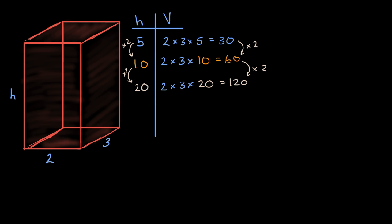Now let's think about something interesting. Let's think about what happens if we double two of the dimensions. So we know that if we have a situation where we have two by three and this height is five, we know the volume here is 30, 30 cubic units.